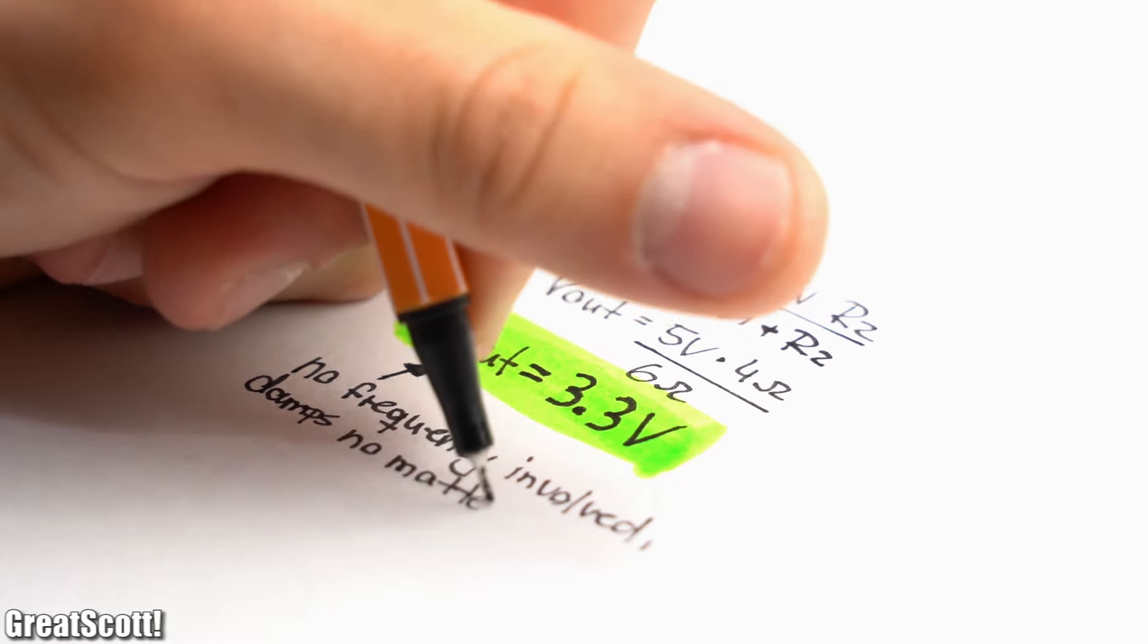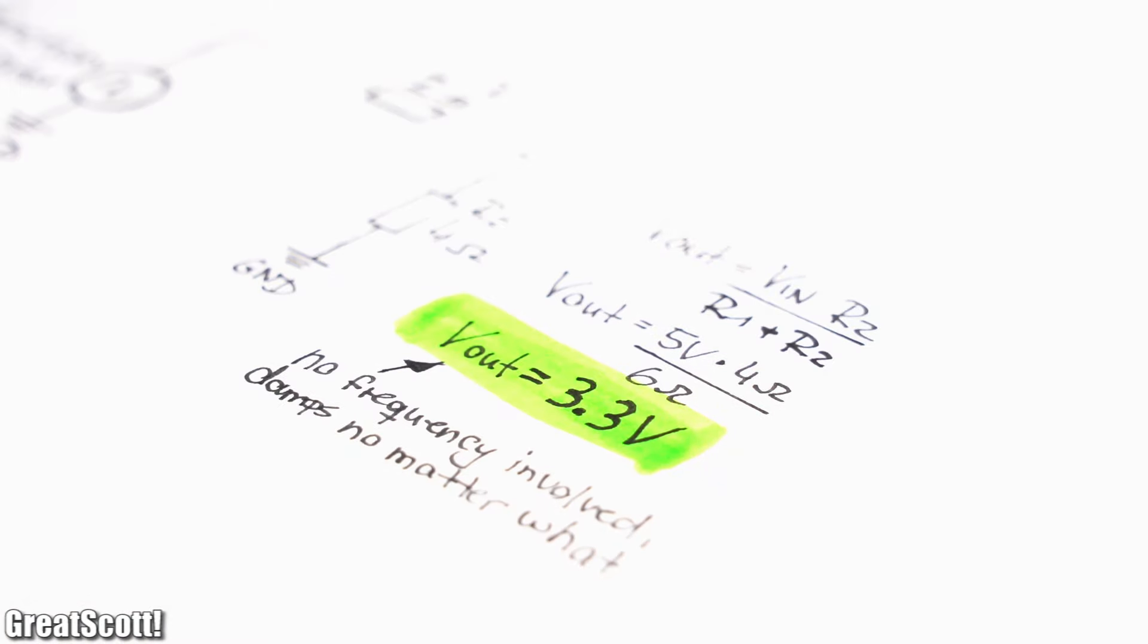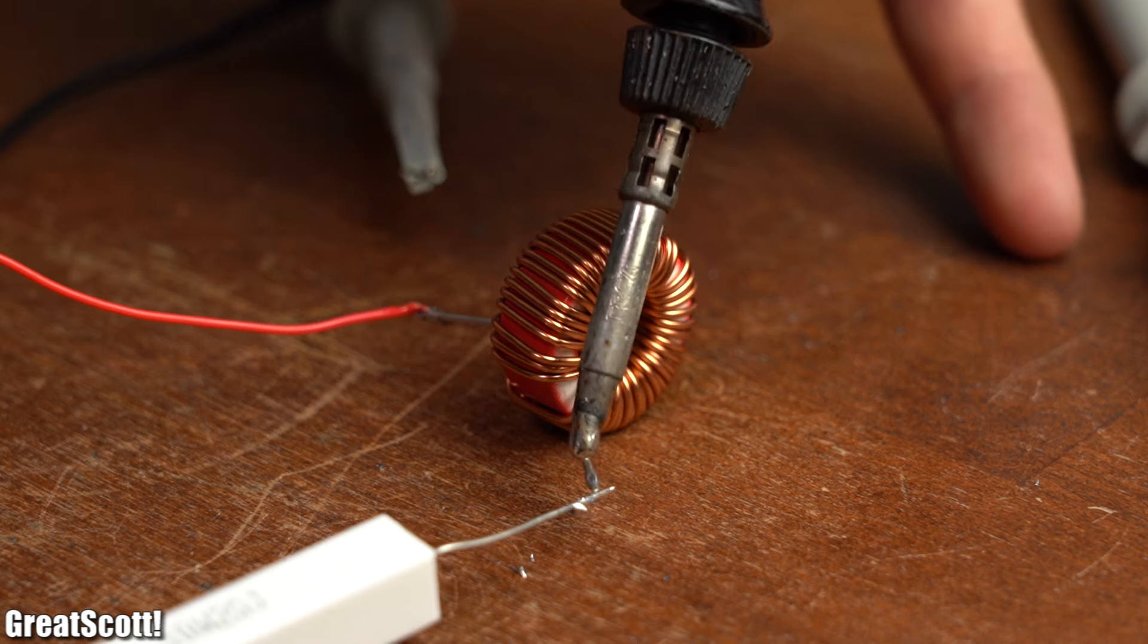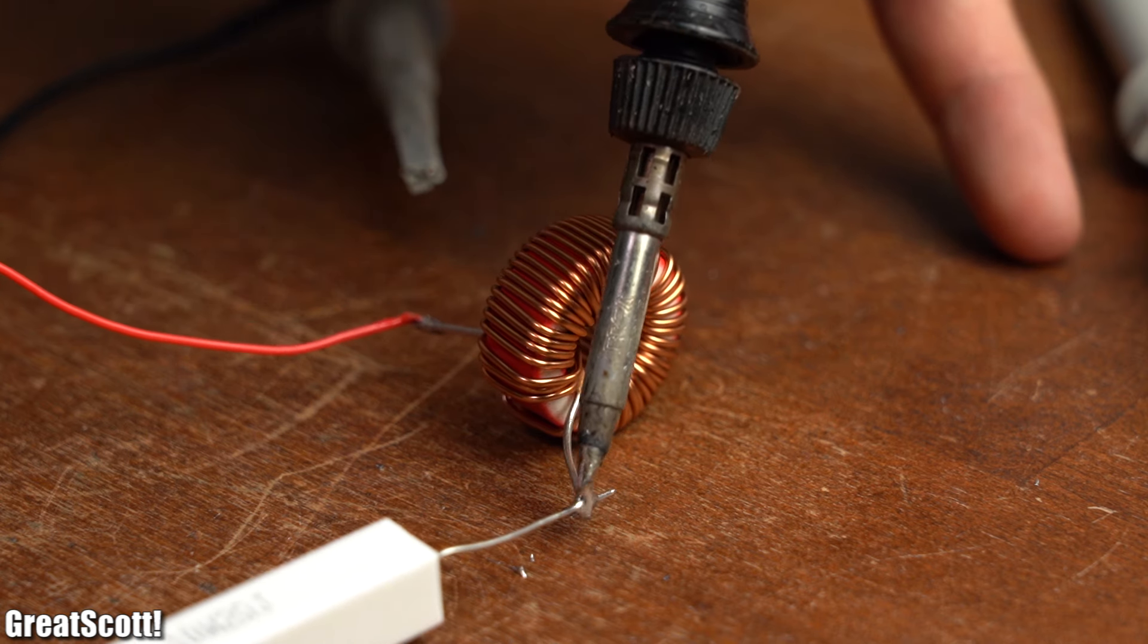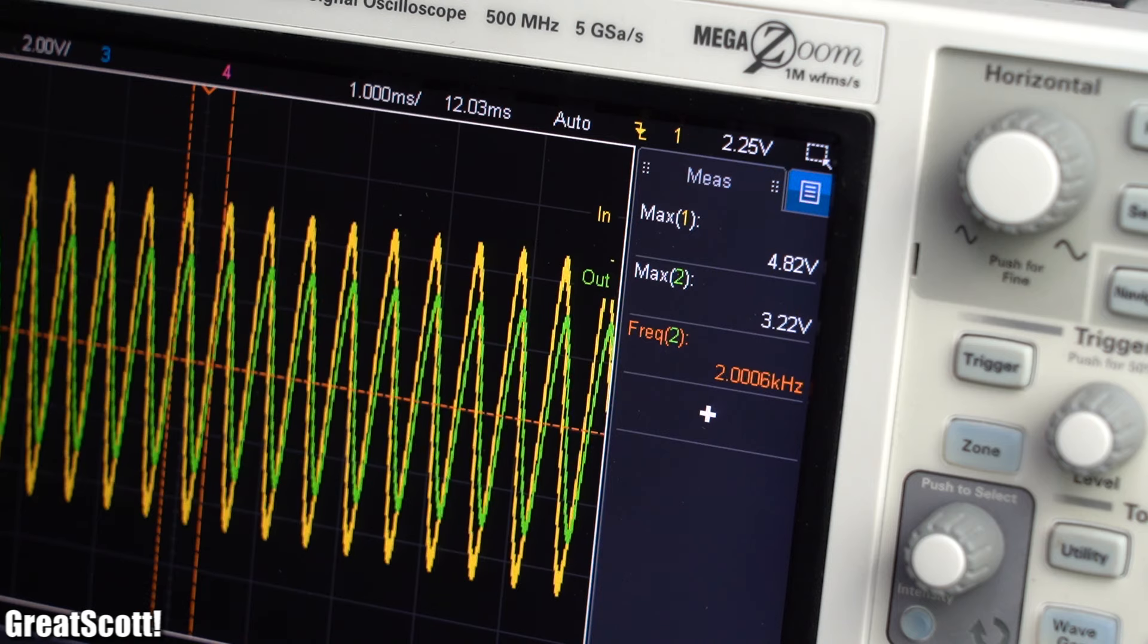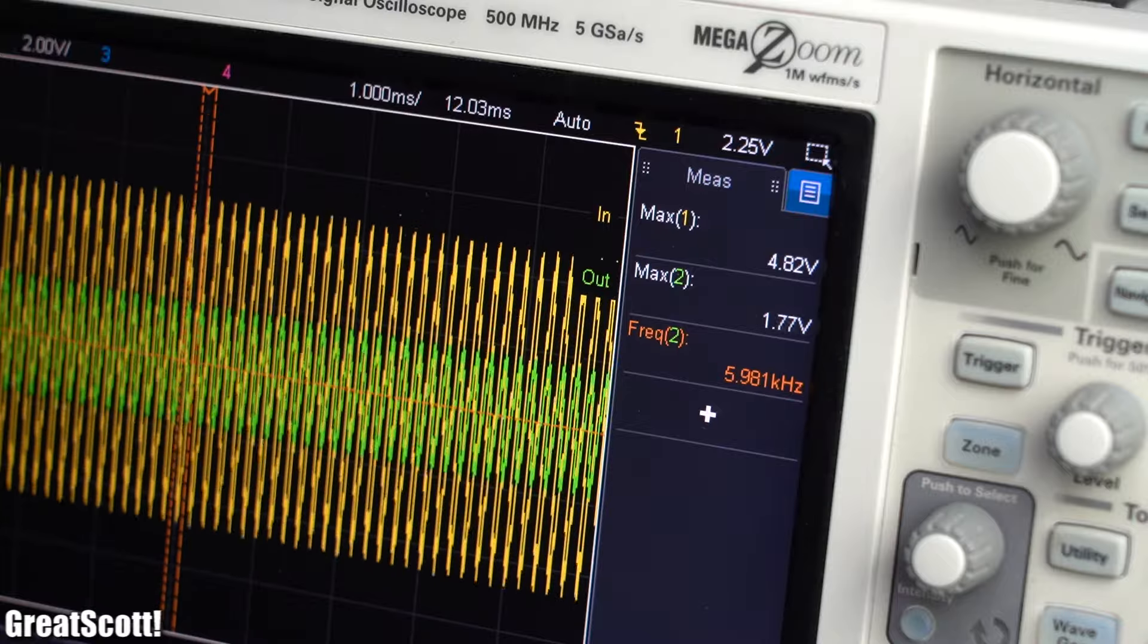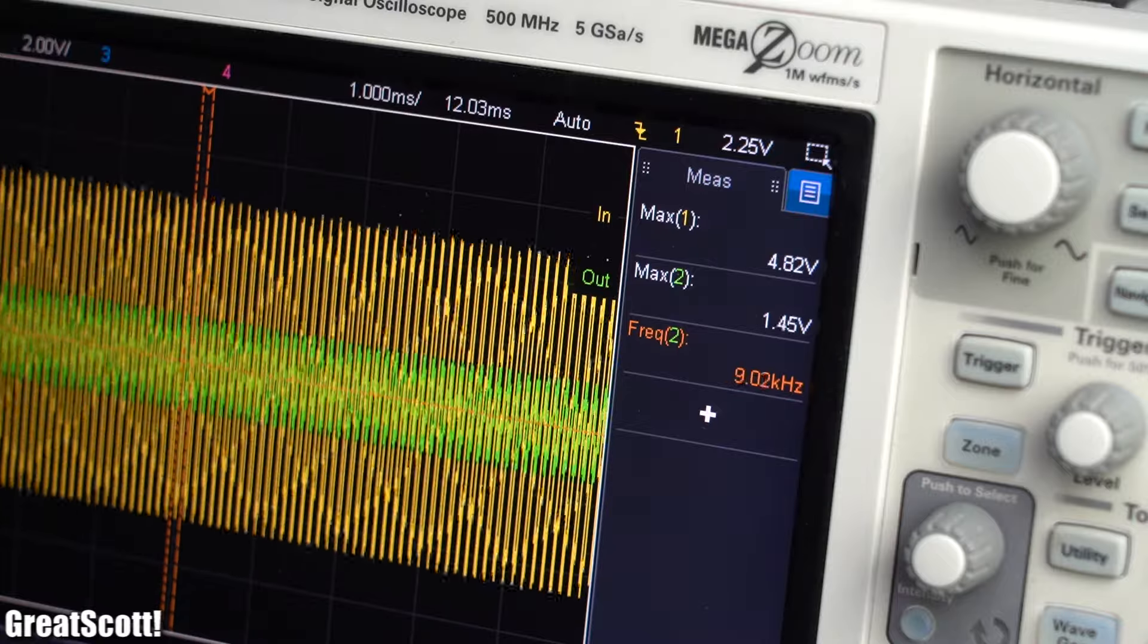This output voltage level can easily be calculated by Ohm's law, which means a resistor does damp our audio signal but sadly across the whole frequency range. So let's move on by connecting a 150 microhenry inductor which is close to one of the audio crossover inductor values. By once again increasing the frequency, we can see that the maximum of the output voltage slowly decreases.